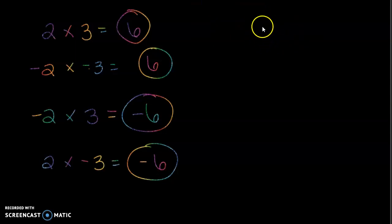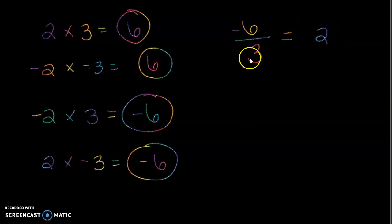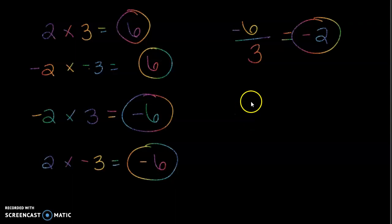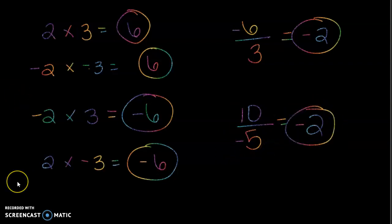Let's try division. Negative six divided by three — this is a fraction bar, it's the same thing as division. Divide like normal: six divided by three is two. Opposite signs, so my answer is negative two. Ten divided by negative five: ten divided by five is two. Opposite signs, my answer is negative two. I hope this video was helpful — it really is just a good review. Please have that beautiful integer rules poster; it's right in your announcements as the very first note.